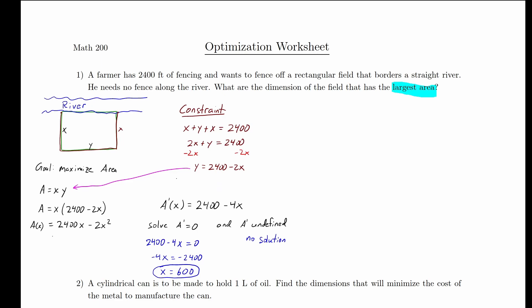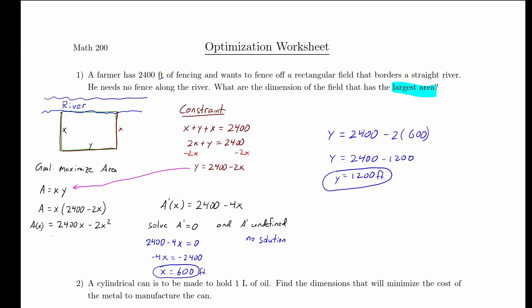Since we have an x value and want both dimensions, we find y by plugging x equals 600 into our y equation: y equals 2,400 minus 2 times 600, so y equals 1,200. Including units since we were measuring in feet: y is 1,200 feet and x is 600 feet. Those are the dimensions that give us the field of largest area. This question didn't ask us to find that largest area, but we could have found it by plugging back into our area function.